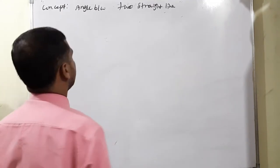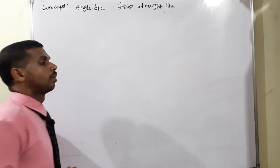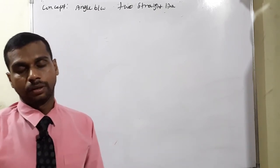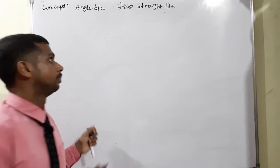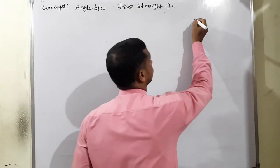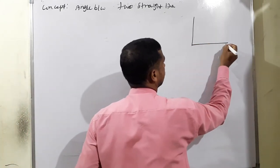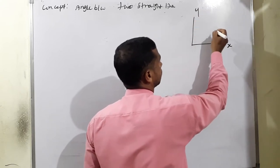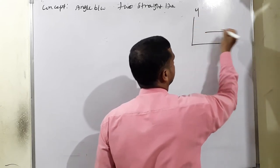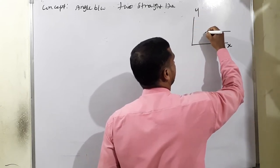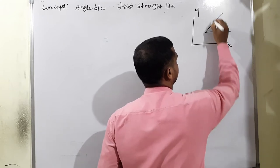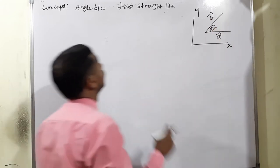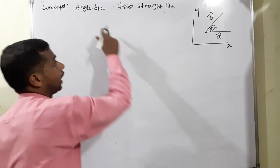Moving to one important concept: the angle between two straight lines. For your understanding, look at the two-dimensional diagram — this is the x-axis, this is the y-axis. In between, we have vector a and vector b. We need to find the angle between them.